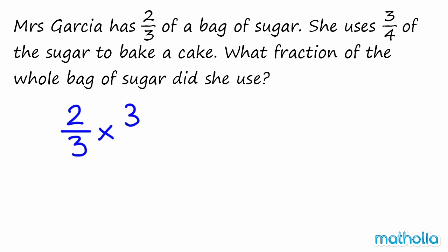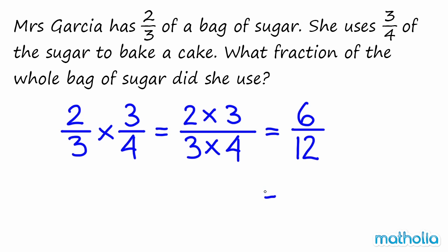Two-thirds times three-quarters is equal to two times three over three times four, which is equal to six-twelfths. We can simplify six-twelfths to one-half. So Mrs. Garcia uses half a bag of sugar to bake the cake.